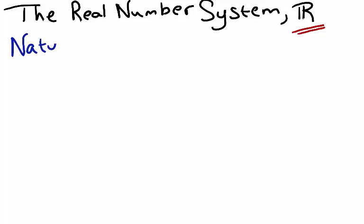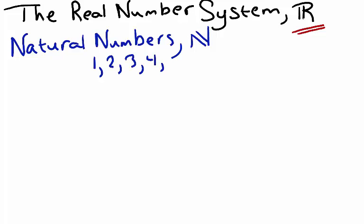We have the natural numbers, often represented by the uppercase N symbol, and the natural numbers are counting numbers. They consist of the numbers 1, 2, 3, 4, 5, and so on, continuing up to infinity.